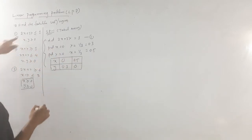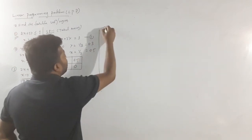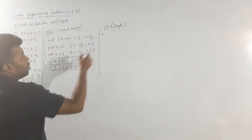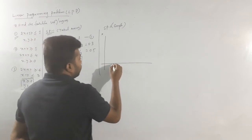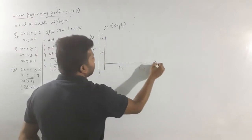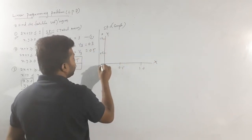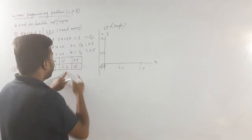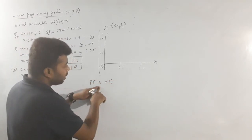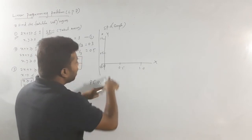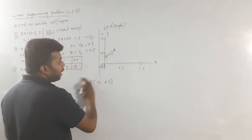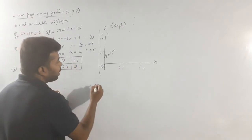Step 2 is the graph. We plot the x-axis and y-axis with the origin. The first point is (0, 0.3): x is 0, y is 0.3. The second point is (0.5, 0): x is 0.5, y is 0. We plot both points and draw the line through them.